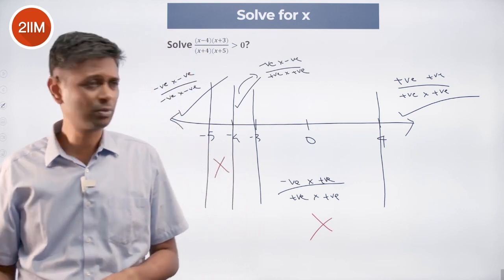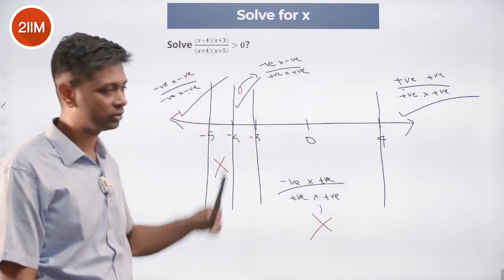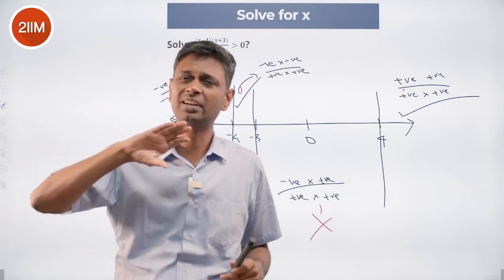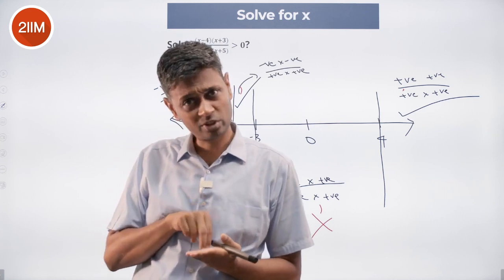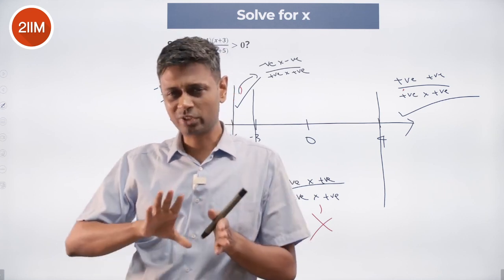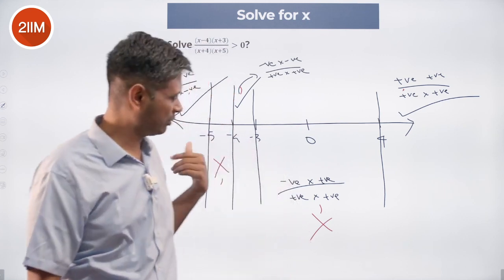Generally, regions will alternate. Positive, negative, positive, negative, positive. It will not alternate whenever there is a double root sitting there, when we're looking at x minus 3 whole square. That's like two roots, 3 and 3. Therefore, that might be some confusion. Otherwise, it's very straightforward.